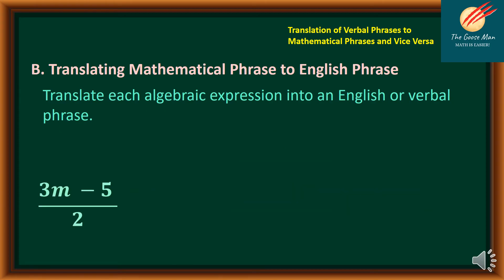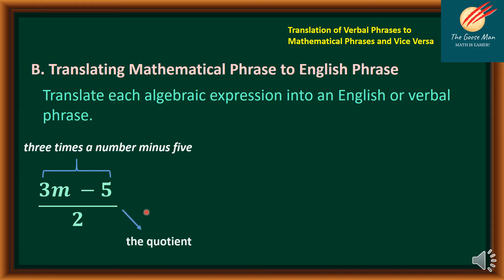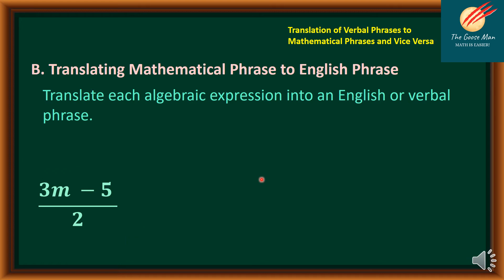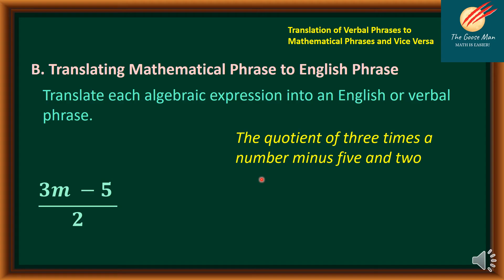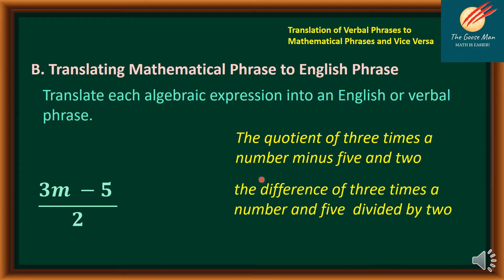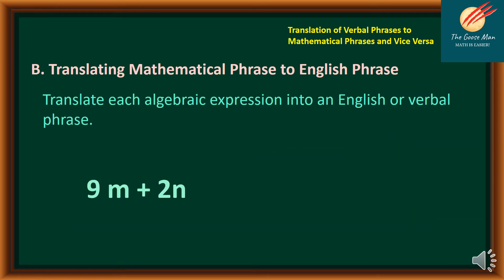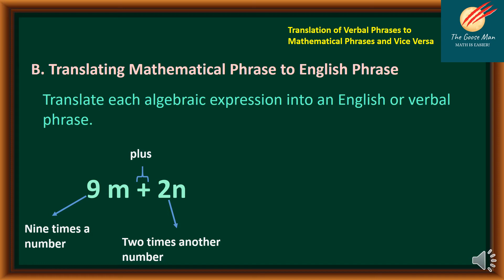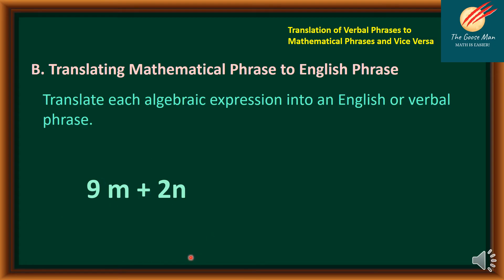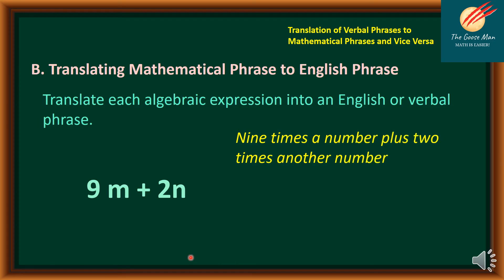Let's try another: (3N minus 5) all over 2. The numerator translates as 3 times a number minus 5. The fraction bar indicates the quotient, and we have 2. One way to translate: "the quotient of 3 times a number minus 5 and 2." Another way: "the difference of 3 times a number and 5 divided by 2." For 9N plus 2M, this is 9 times a number plus 2 times another number — since M and N are different numbers. Another way: "the sum of 9 times a number and twice another number."